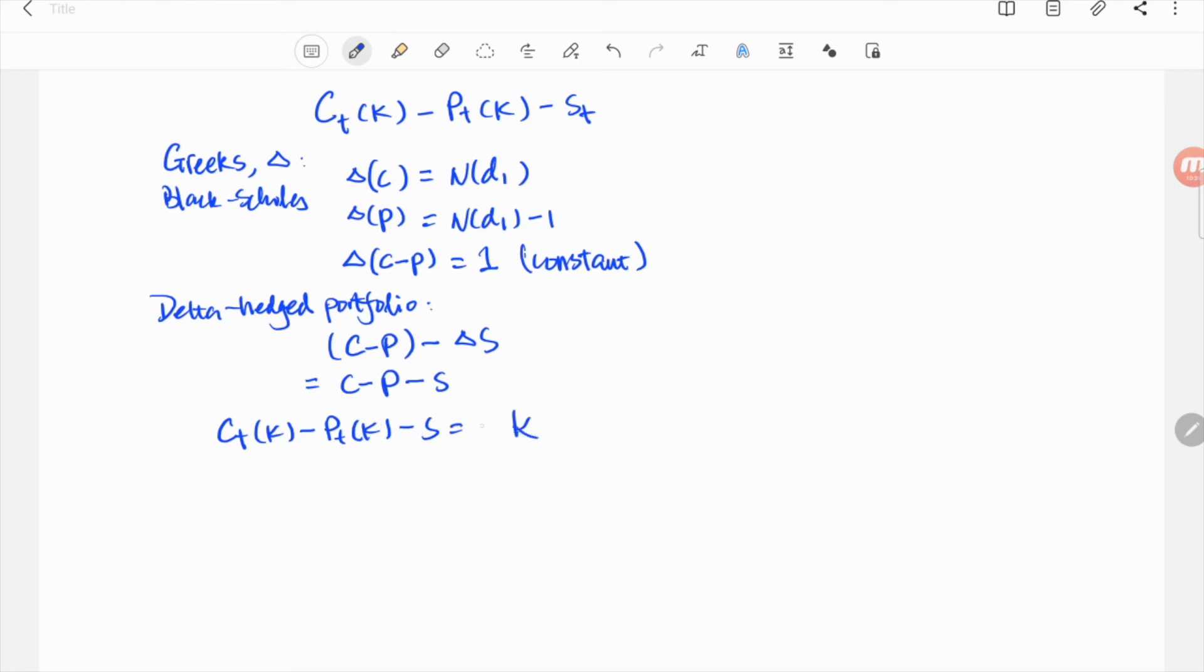Note we assumed the discount factor to be 1 earlier. If it's not, then we just need to discount the final value of the portfolio to a given time for the parity to hold.